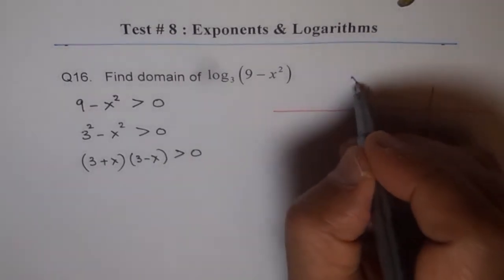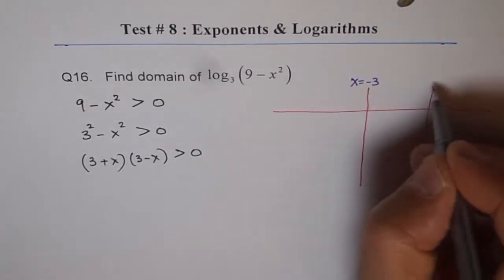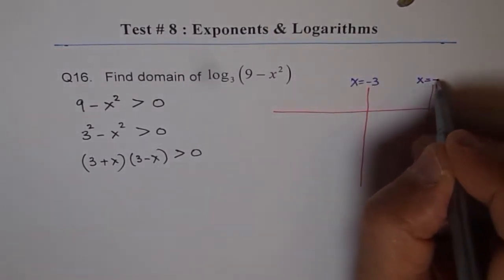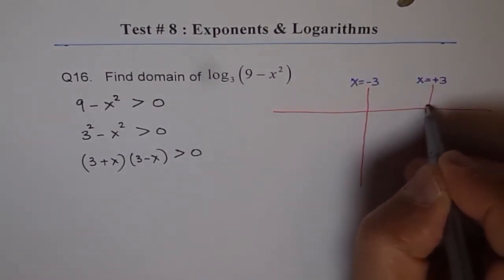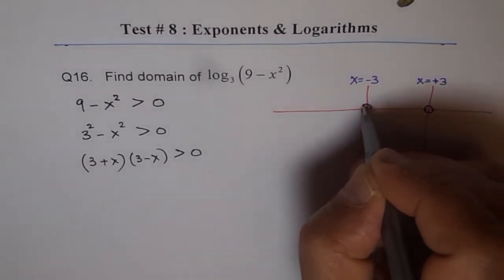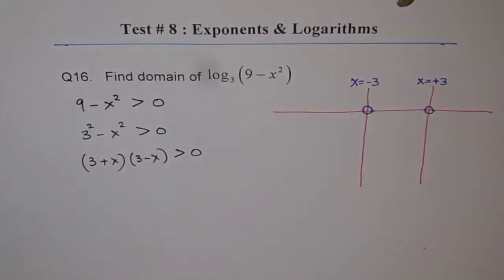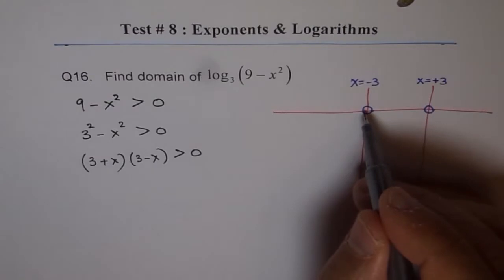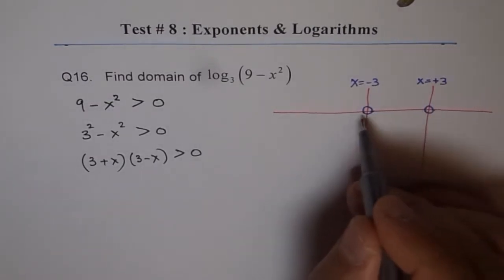One zero is at x equals to minus 3. The other one is at x equals to plus 3. I am making a hole here because we want something which is positive not 0. So these are the places where we have zeros. These points are not in our domain.